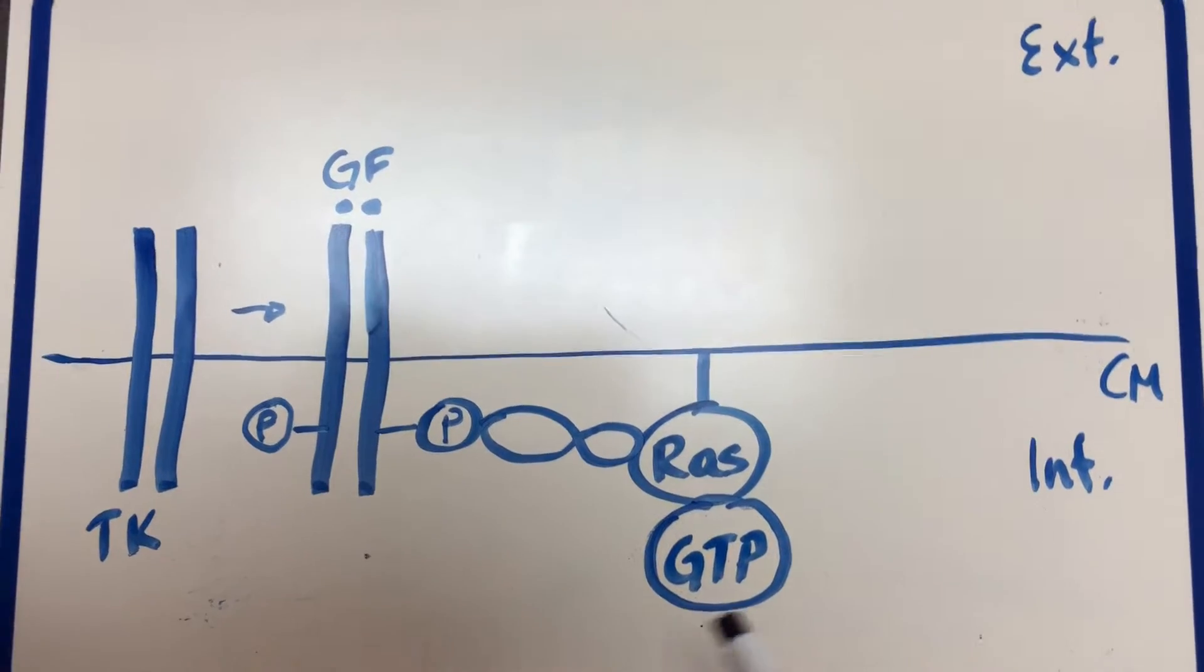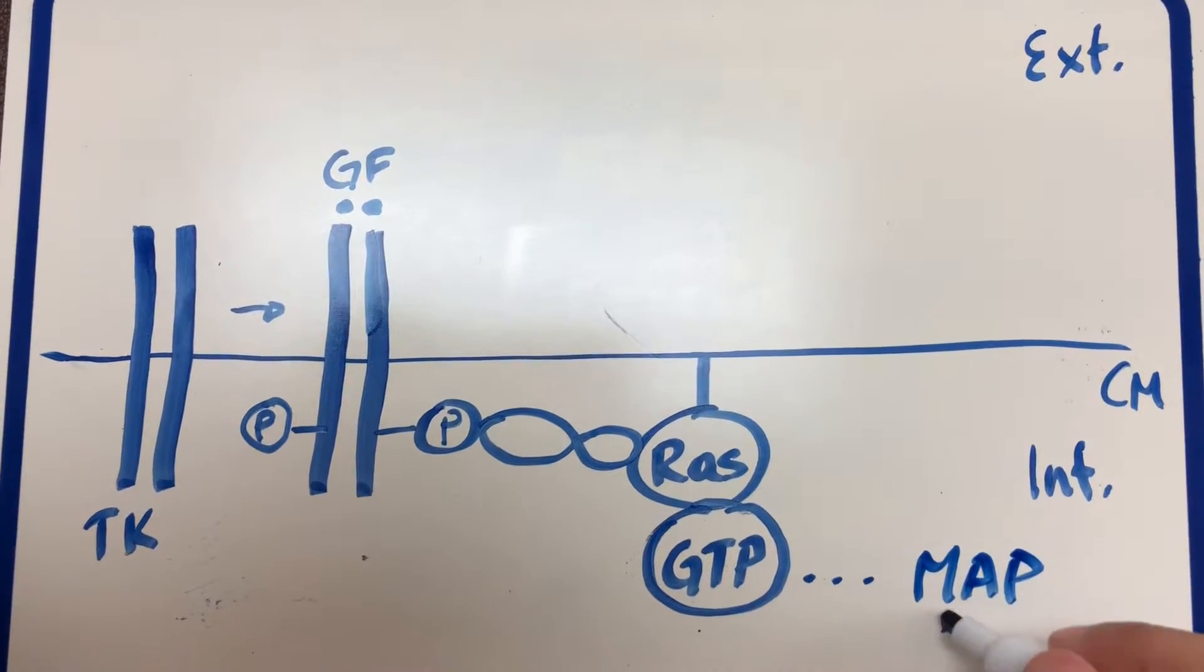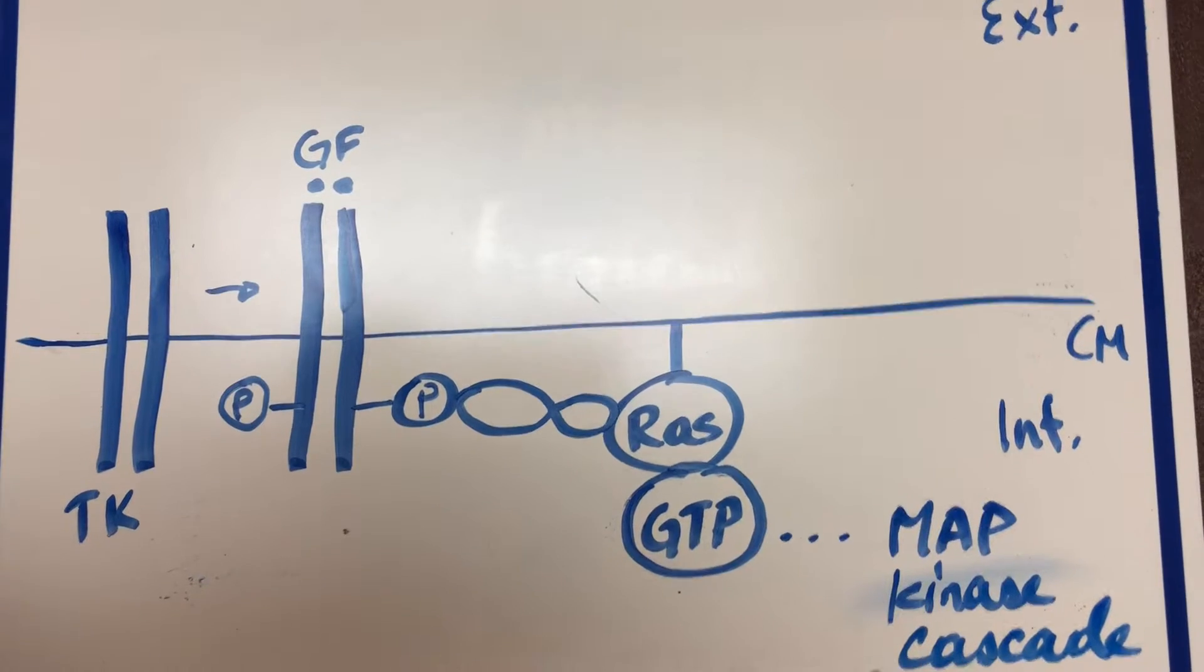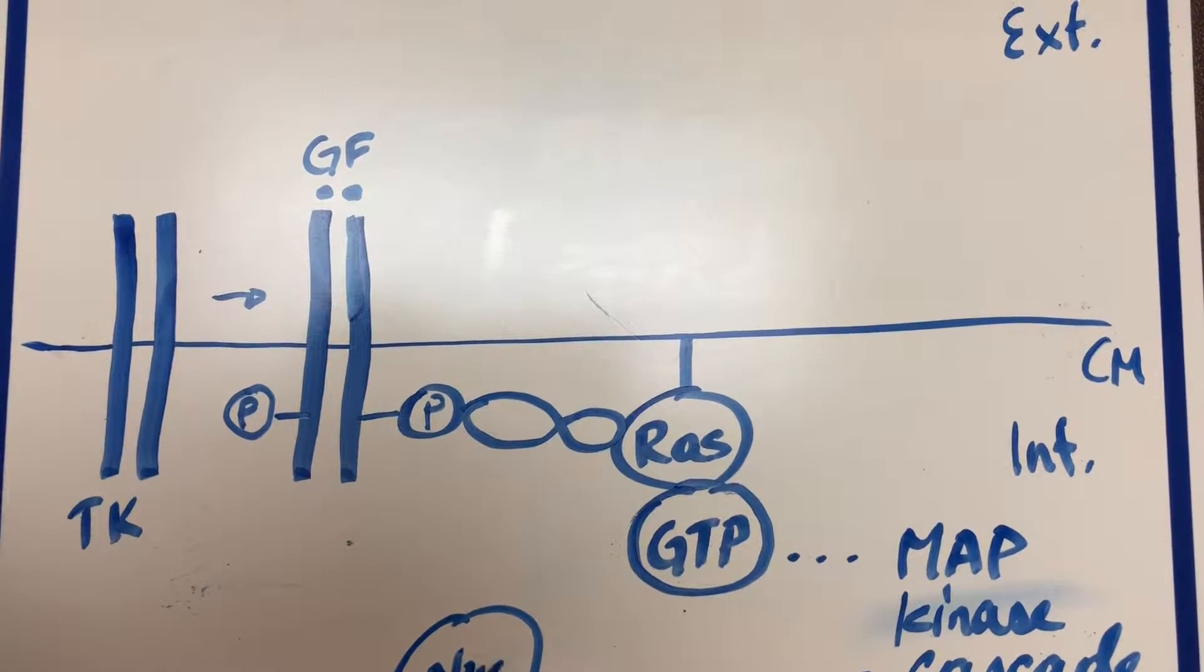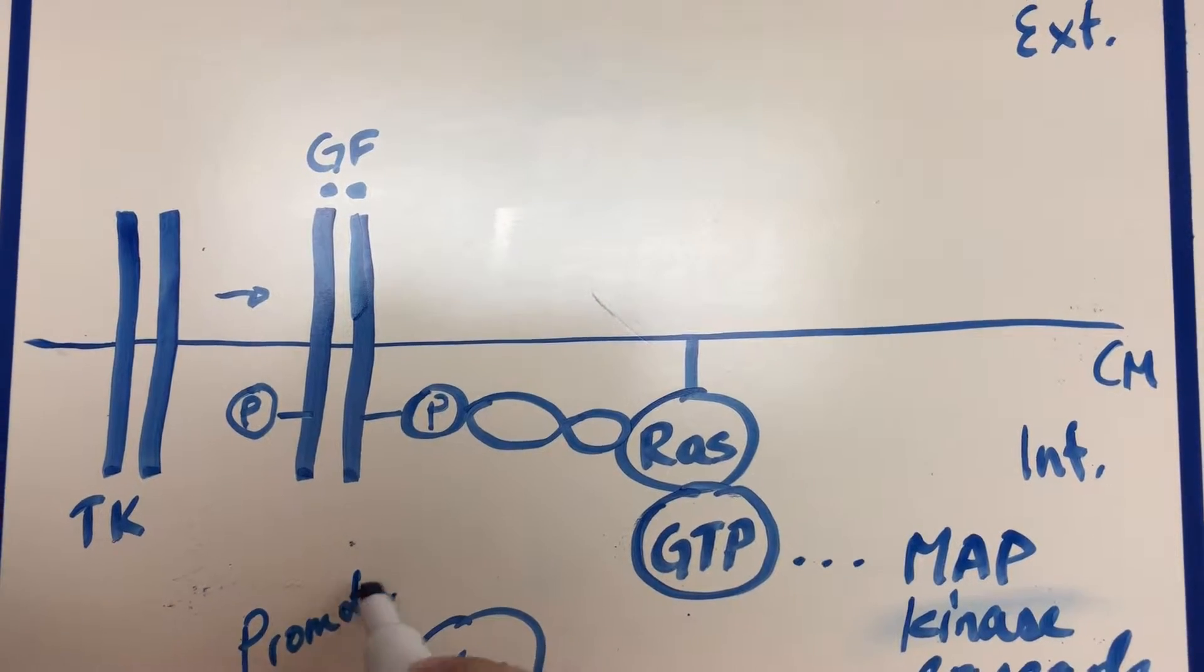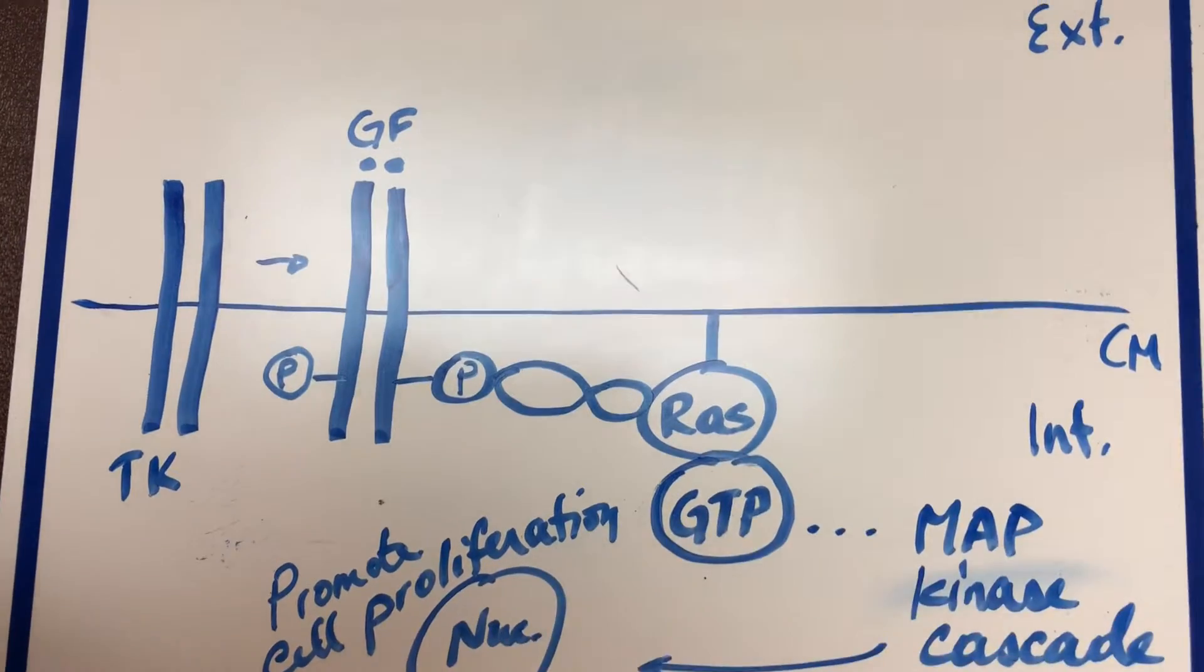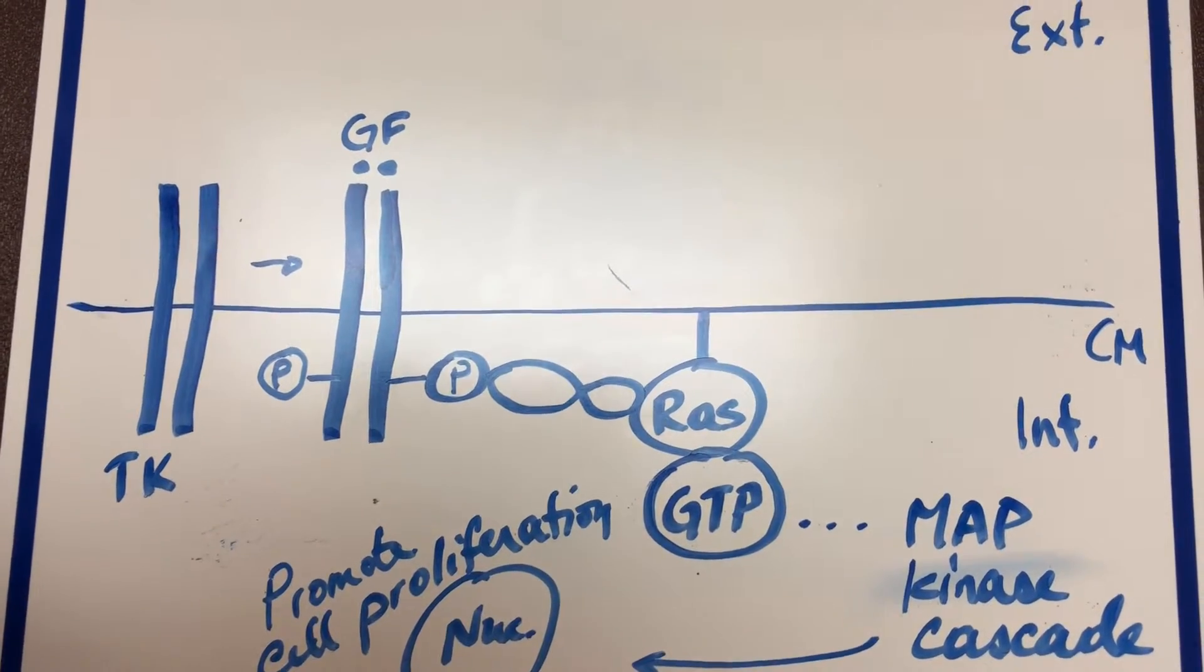So it goes from GDP bound to GTP bound. After this we have the MAP kinase cascade, which leads to nuclear signals which promote cell proliferation. So as you can see when RAS is active we get cell proliferation. But we don't want that to go on uncontrolled so there has to be a way to undo this as well.